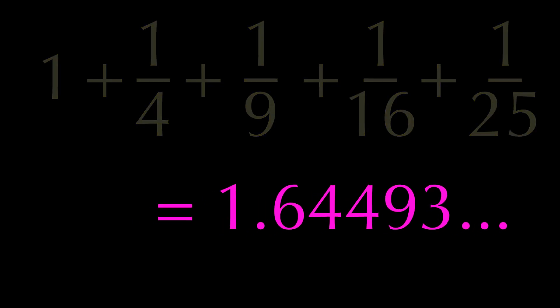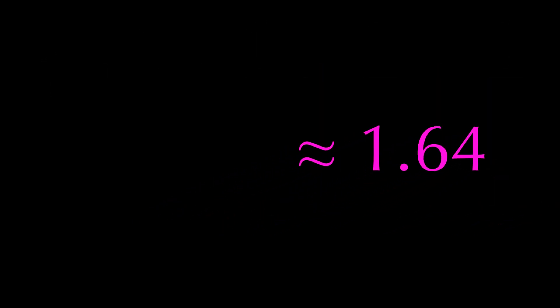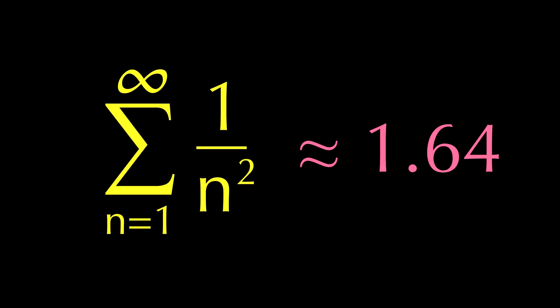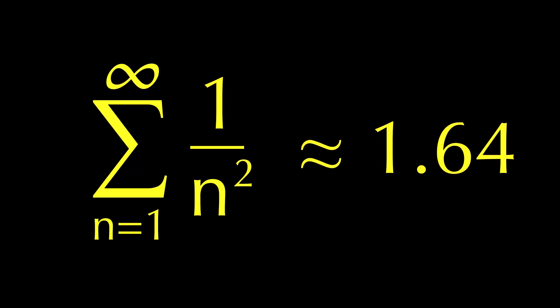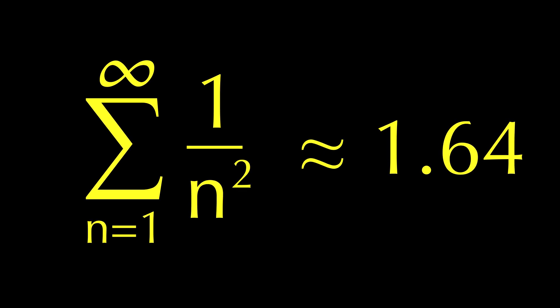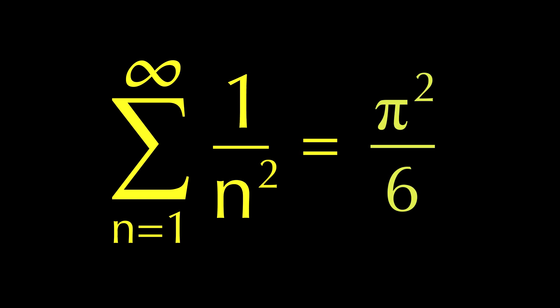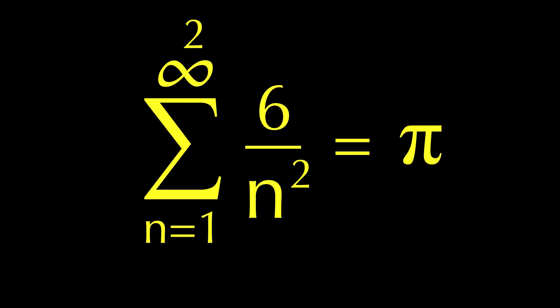We can also express this as an infinite summation that looks like this. And for a while no one knew how or if this number could even be expressed in some more elegant way. That is until Leonard Euler demonstrated that it is equal to this thing, which I think is pretty cool because you can use this to make this silly way of getting pi.